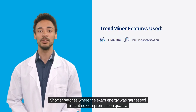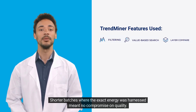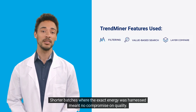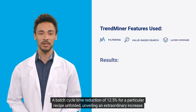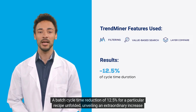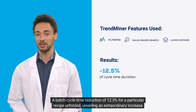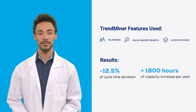The results were transformative. Shorter batches where the exact energy was harnessed meant no compromise on quality. A batch cycle time reduction of 12.5 percent for a particular recipe unfolded, unveiling an extraordinary increase of over 1,800 hours in capacity annually.